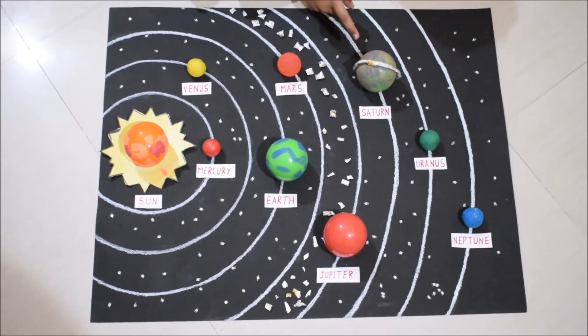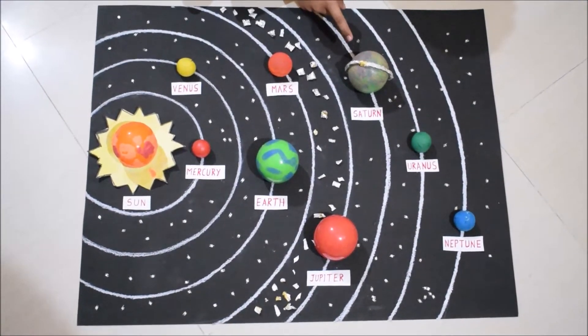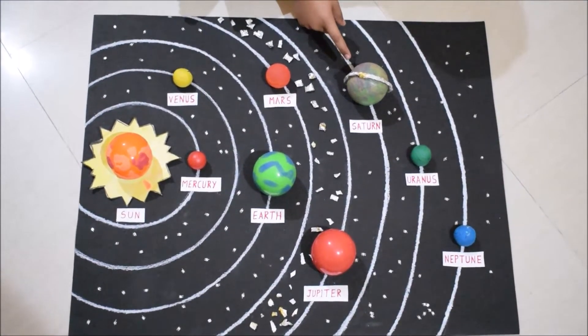Saturn is the lightest planet. It has rings of rock-like particles surrounding it.